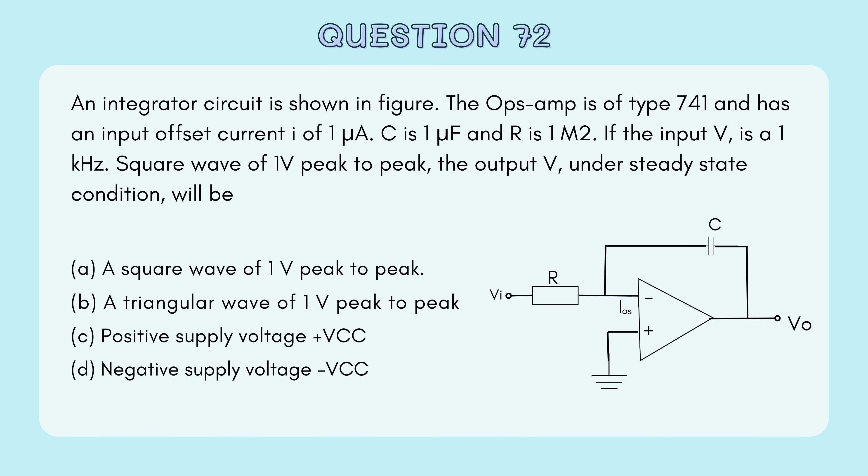In this question, the output voltage is asked. R, C, and IOS values are all given, and the diagram is also given. The options given are: Option A – a square wave of 1 volt peak to peak; Option B – a triangular wave of 1 volt peak to peak; Option C – positive supply voltage +VCC; Option D – negative supply voltage –VCC. Let's look at the solution.